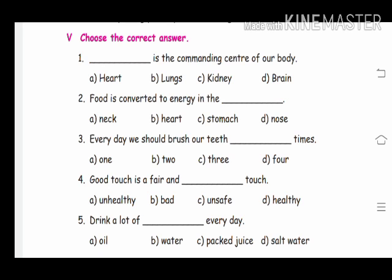Second one — food is converted to energy in the dash. Options: A-Neck, B-Heart, C-Stomach, D-Nose. Answer children... yes, stomach.